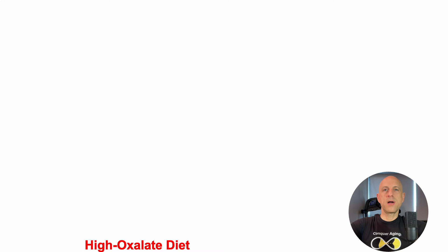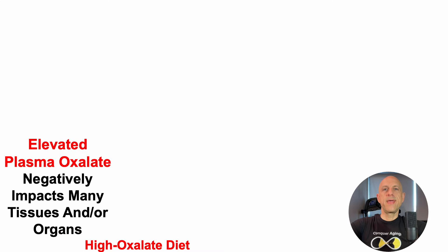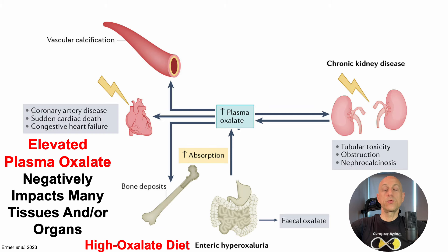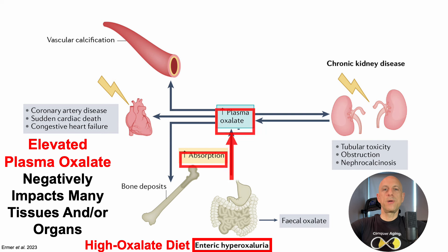There's a lot of talk about oxalates, and that's because elevated plasma oxalate negatively impacts many tissues and organs, as we'll see here. A high oxalate diet on its own will lead to a buildup of oxalate in the intestine, which will then be absorbed into the bloodstream, thereby increasing plasma oxalate.